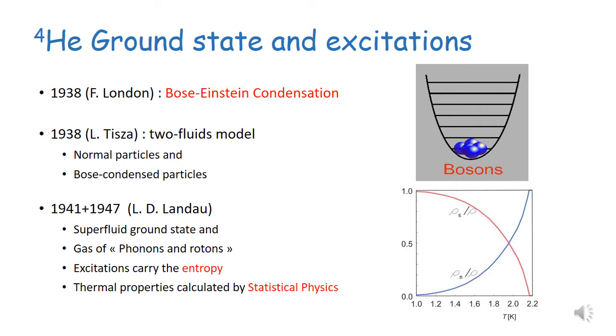The main concepts related to the ground state of helium-4 and the elementary excitations are essentially the Bose-Einstein condensation proposed by London to explain the properties of the superfluid, the two-fluid model by Tisza in the same year, where normal particles and Bose-condensed particles coexist.